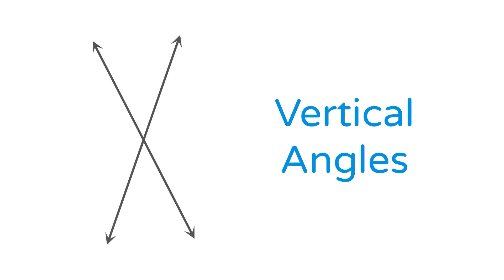Let's start with vertical. Vertical angles are angles formed opposite each other when two lines intersect. Here we have a pair of vertical angles. One is 41 degrees, and the other we'll label with the variable n. A useful property of vertical angles is that they are congruent, so they have the same measure. That means n equals 41 degrees.